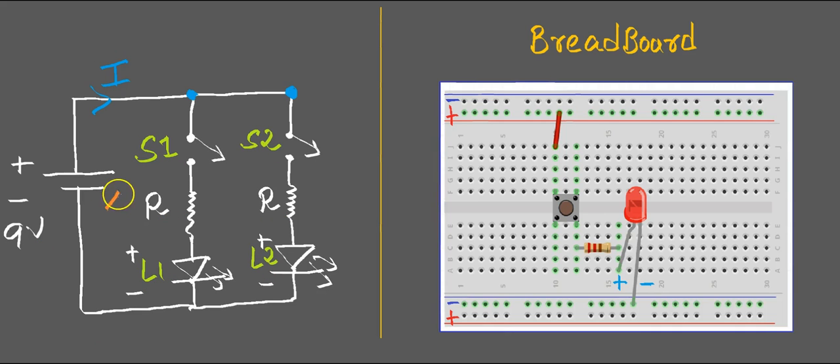Let us see how to connect the circuit on the breadboard. One important thing while making connections: do not start connecting everything at once. There are a couple of paths for current to flow through this circuit, so start following that approach — make the circuit for the first path first, then connect components for path number 1, then path number 2.